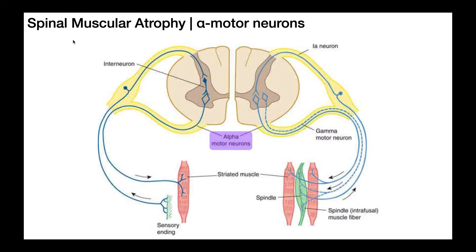In this video, we're going to discuss the basic mechanism and what we might observe in someone with spinal muscular atrophy. In spinal muscular atrophy, we have progressive death of what we call alpha motor neurons. Let's first understand what an alpha motor neuron is.